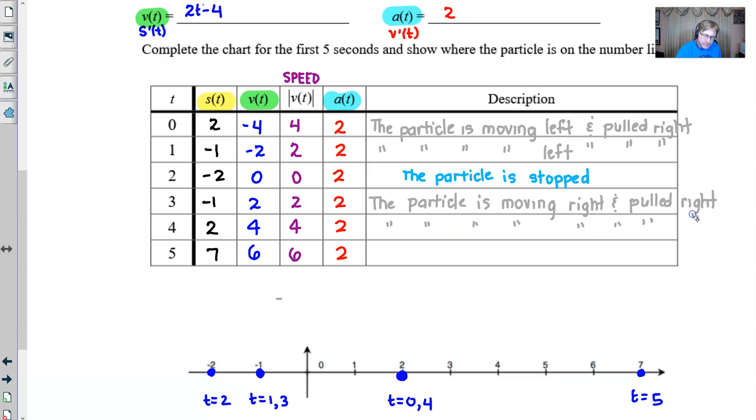And I think that we can pretty much guarantee that that is the case the rest of the way. Particle is moving right and is pulled right at time 4. And the particle is moving to the right and is pulled right at time 5 as well. Now, I'll tell you what, I'm going to go ahead and write the word right only because it's such an important piece of this. I want to make sure that I at least drew some focus to that.